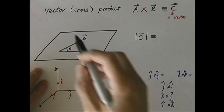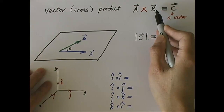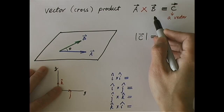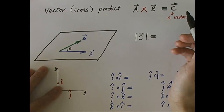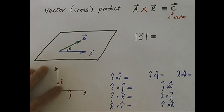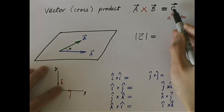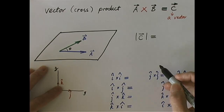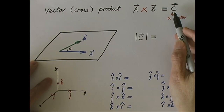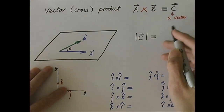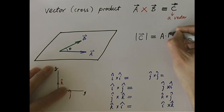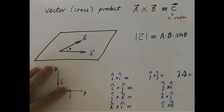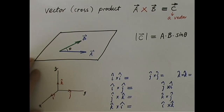Let me introduce the so-called vector or cross product between two vectors A and B. The symbol I use is A cross B, to be differentiated from A dot B, the scalar product. A dot B is a scalar defined to be the magnitude of A times the magnitude of B times cosine theta, where theta is the angle between them. Here, let me introduce a vector C which is A cross B — a vector product because the outcome is a vector. The magnitude of C is defined to be the magnitude of A times the magnitude of B times sine of the angle between them — sine theta, not cosine theta. This combination appears very often in mathematical formulas for physics and engineering, which is why we define it this way.